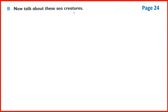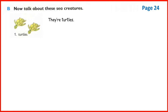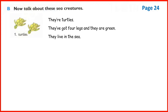Now Section B - talk about these sea creatures. Number one: turtles. They are called turtles. They have got four legs and they are green. They live in the sea. Now you repeat. Yes, you are right - they are turtles. They have got four legs and they are green. They live in the sea.